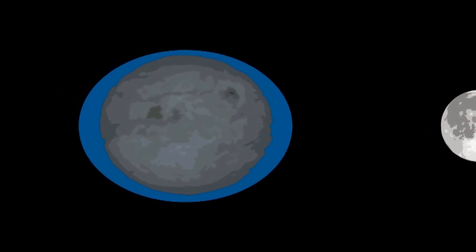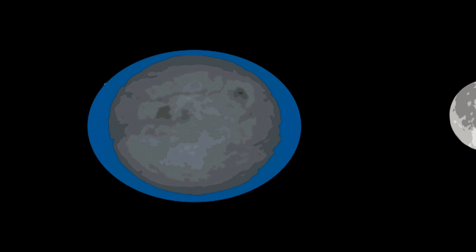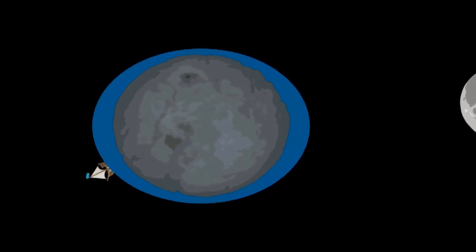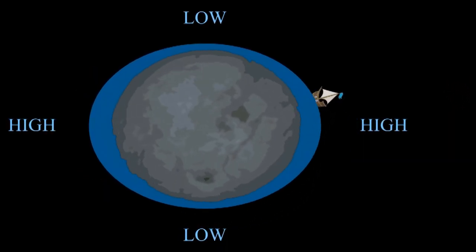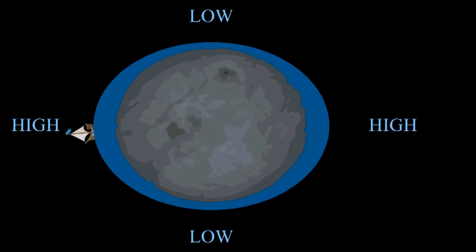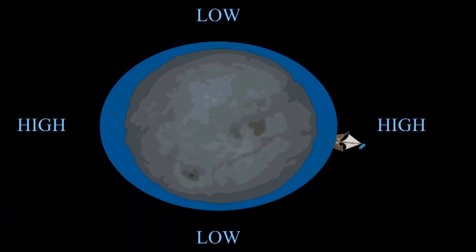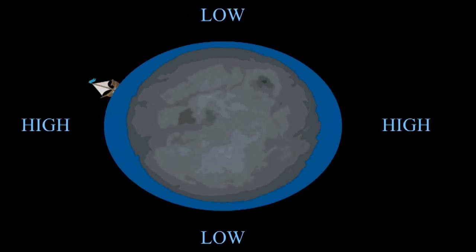The earth spins one time per day. The moon is also moving, but not as quickly. As the earth spins, we experience a high tide, then a low tide, then a high tide, then a low tide. Every day, we get two of each.